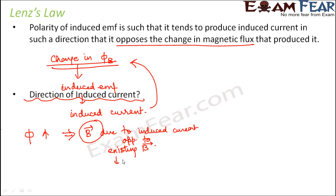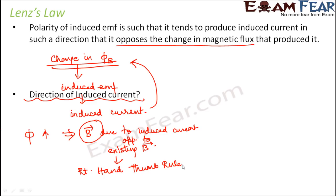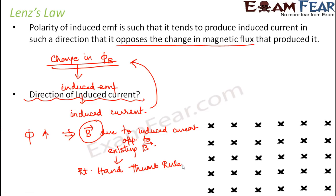Once you know the direction of the magnetic field due to induced current, you apply the right hand thumb rule to find the direction of the induced current. For example, suppose this is a magnetic field denoted by crosses, meaning it is in the downward direction. When denoted by dots, it is in the upward direction. In this case, the magnetic field is in the downward direction, and we have this conductor.